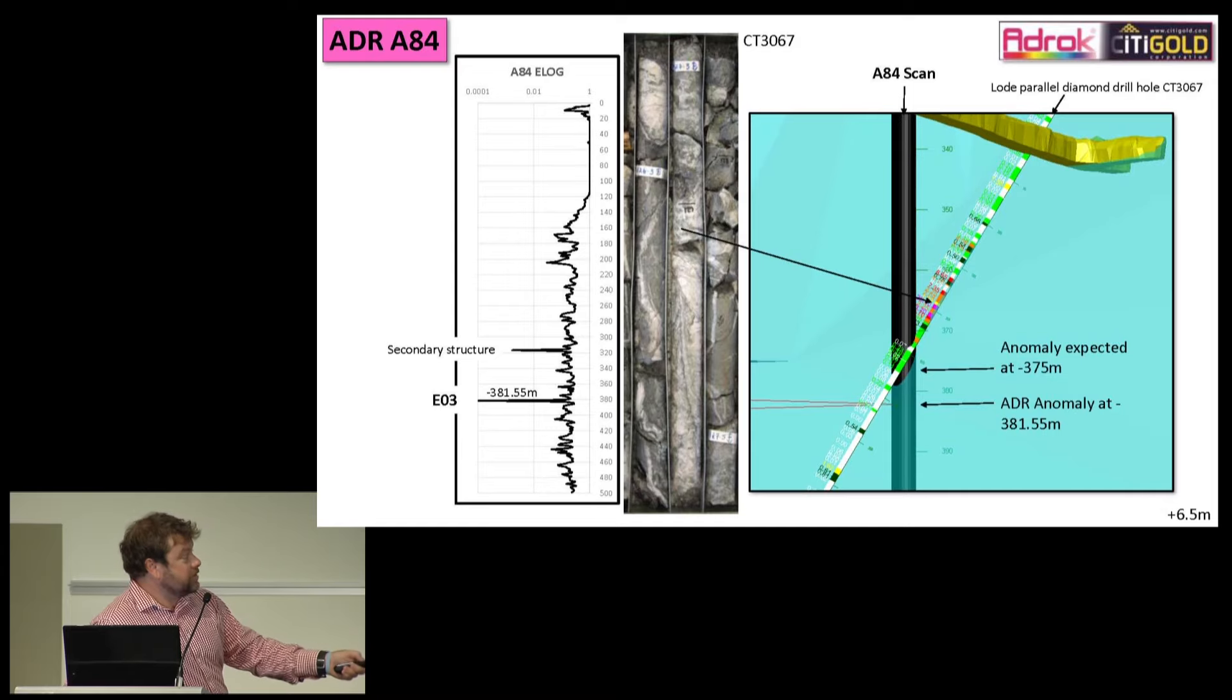I'll show you that in a bit more detail. The reason we know that this surface, this blue shaded area which is our interpreted structure, is because we've got a whole lot of load perpendicular but also one really nice load parallel drill hole. You can see all these purple and red numbers in through here. Here are the high-grade intercepts up to 2 and 3 ounces to the ton. This is what the core actually looks like. So we've got good structural control on where that ADR scan was meant to pick it up, which was at minus 375 meters. But where it did actually pick it up was 381.5 meters, so it's about 6 meters out. But in terms of one peak, there's one major peak and that major peak corresponds to where we'd expect it at that EO3 intercept.